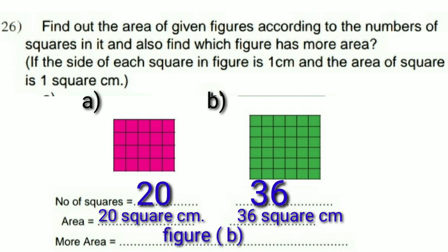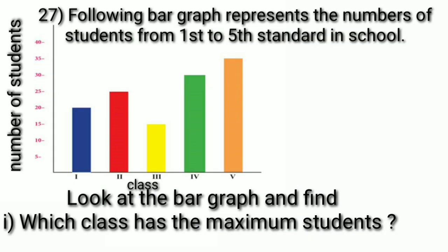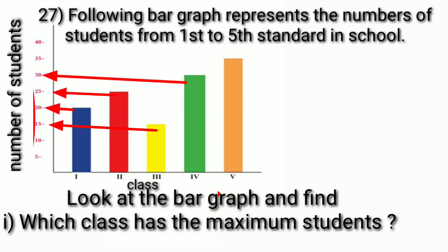Question 27: the following bar graph shows the number of students from class 1 to class 5 in a school. Look at the bar graph — one axis shows the class and the other shows the number of students. Class 1 has 20 students, class 2 has 25, class 3 has 15, class 4 has 30, and class 5 has 35. The maximum number is 35, which belongs to class 5.